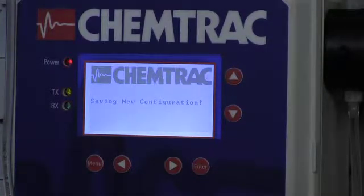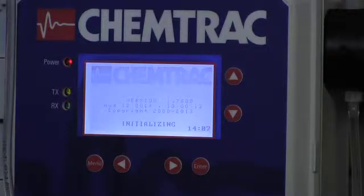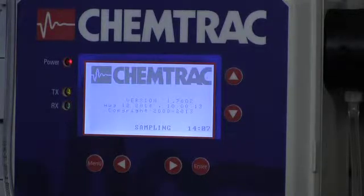That's going to save our configuration, and then we'll keep making sure that our flow is at 75 milliliters per minute. And when this comes out of the save mode, it's going to go into a sampling mode, and it'll just be about 10 seconds, and we'll see what the results are.